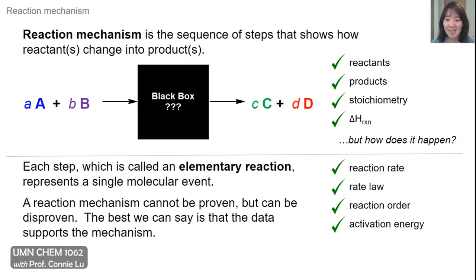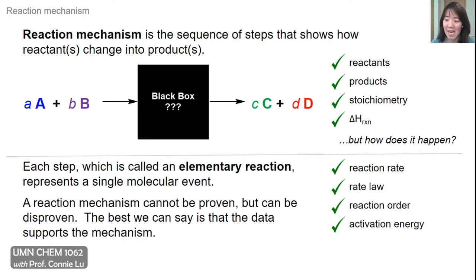Kinetics, on the other hand, informs us about reaction rate — how fast this reaction occurs. We can use that to determine what the rate law is, which has information about the reaction order. We can also know something about the transition state, at least the activation energy to reach that transition state.